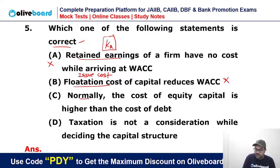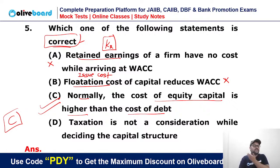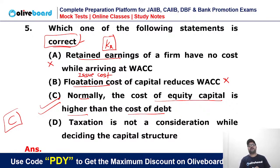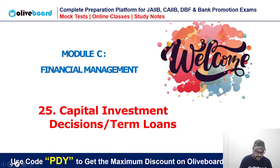Normally, the cost of equity capital is higher than the cost of debt — this is a correct statement. Always, equity is more expensive for a company and debt is cheaper. In debt, you pay fixed interest, whereas in equity capital you have to match investor expectations — that is why equity is always more expensive. 'Taxation is not a consideration while deciding capital structure' — this is wrong. Tax must be considered. So C is the correct answer.